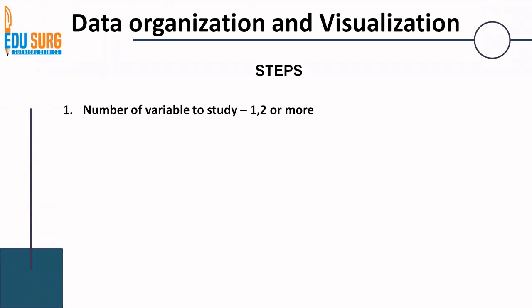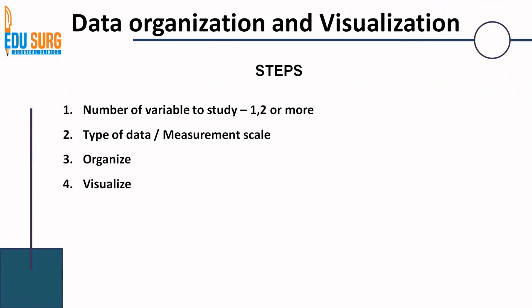What are the steps of data organization and visualization? The first point is to understand the number of variables that you have studied and the number of variables that you need to organize and visualize. Then you see the type of data — nominal, ordinal, interval, ratio — the measurement scale. You organize it and then you visualize it. These are the four steps that we will be following for all four types of data.